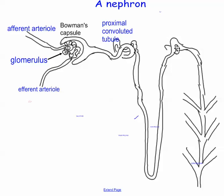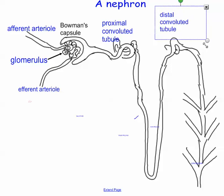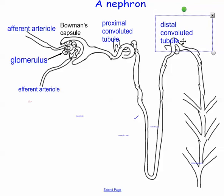Over here there's another little convoluted part which is a little bit more distant from this side, so we actually refer to this as the distal convoluted tubule.